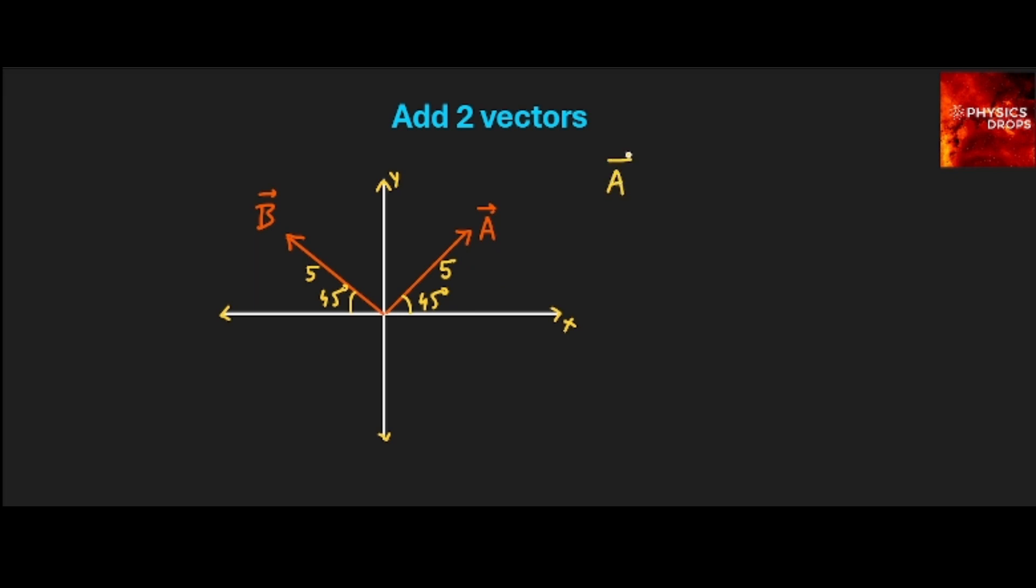Let us consider vector A first. If we look at this triangle here, the right angle triangle, the x component of A will be like this, the y component of A will be somewhere along the y-axis. So let us find out what is A's x component.